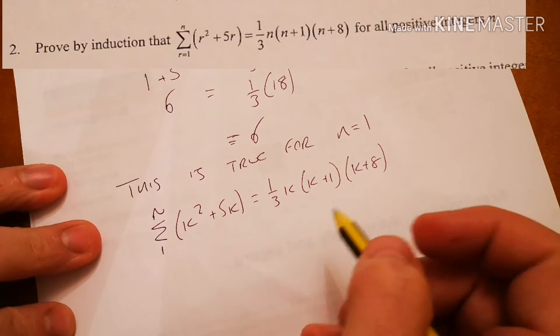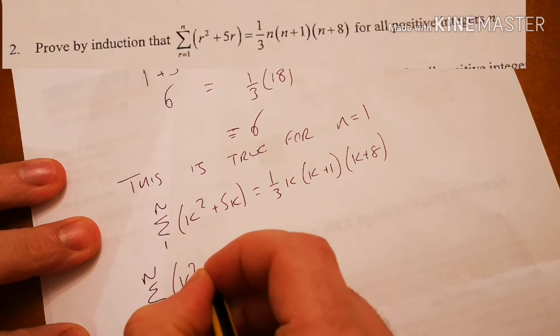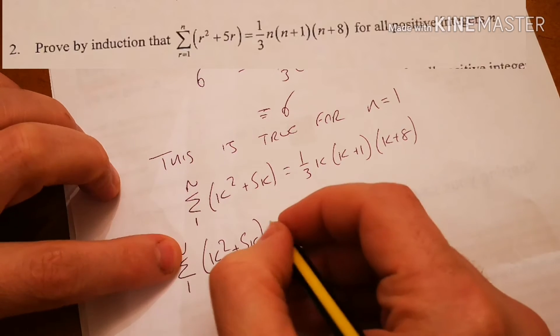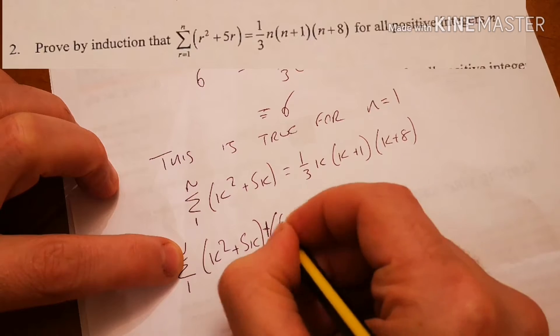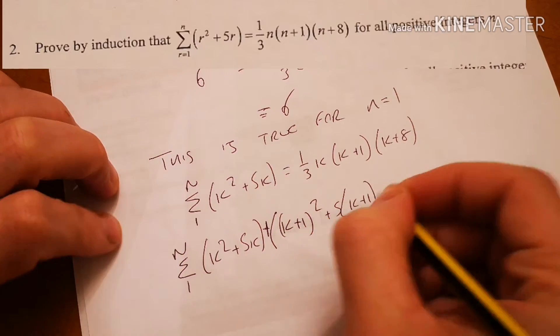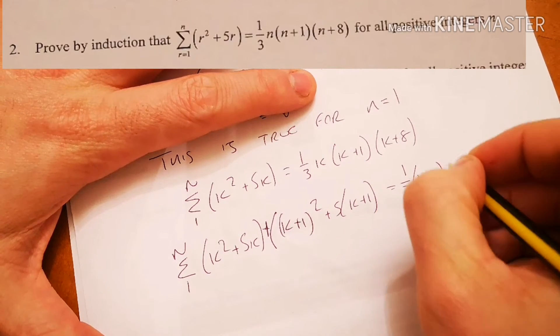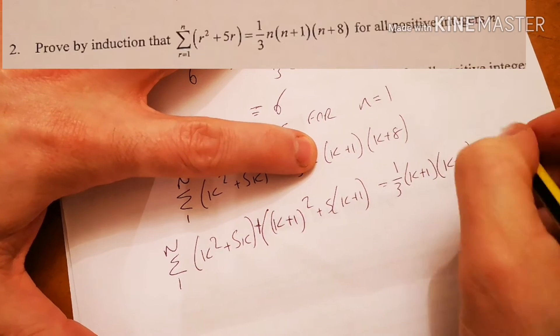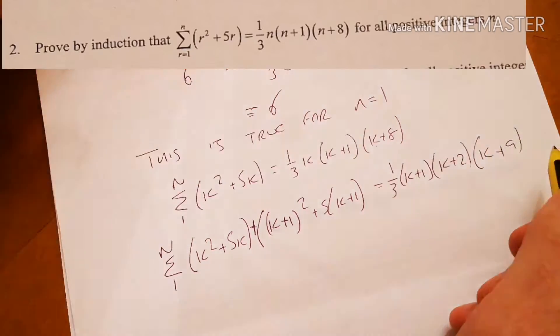Okay, and now we'll try and prove for k plus 1. Okay, so this is going to be my previous term. Okay, plus another lot of this, but remember k's going to turn into k plus 1. So plus k plus 1 squared plus 5, k plus 1. And hopefully that's going to be the same as the third bracket, k plus 1, k plus 2, because it's k plus 1 plus another one. k plus 9, because it's k plus 1 plus 8, which is k plus 9.